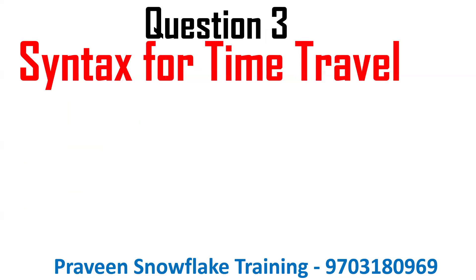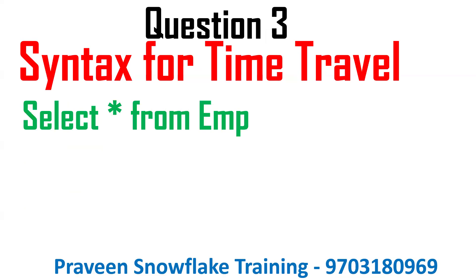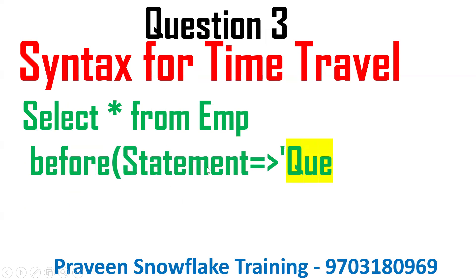Question number three: what is the syntax for time travel? To get active data you use SELECT * FROM table, but to access historical data you use the AT or BEFORE statement with either query ID, offset, or timestamp. For example: SELECT * FROM empl AT (BEFORE => ...) with query ID, offset, or timestamp.